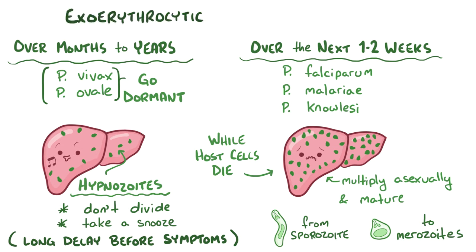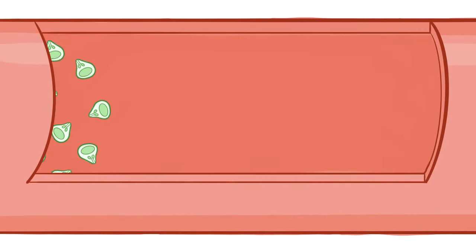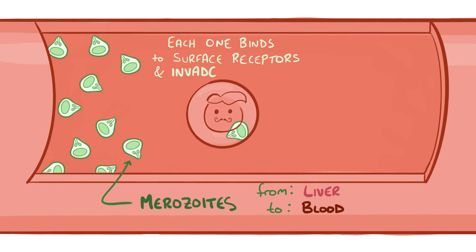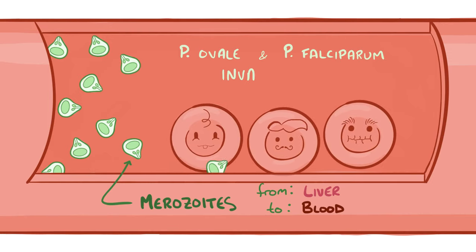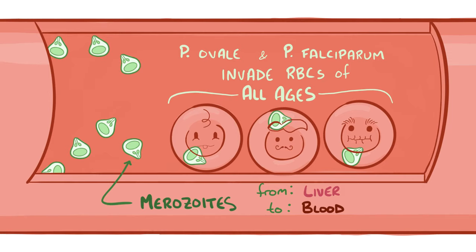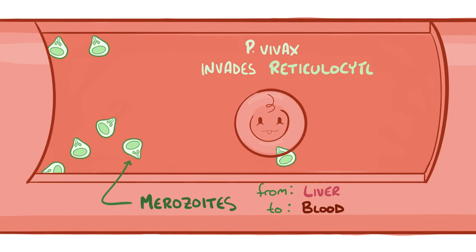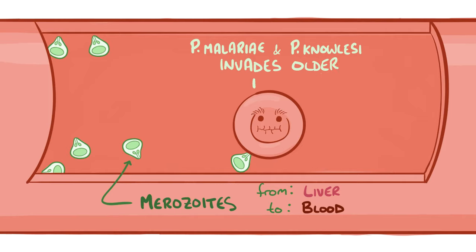This is called the exoerythrocytic phase because it happens outside of the erythrocyte, or red blood cell, and it's generally asymptomatic. The merozoites are then released into the blood, and each one binds to a surface receptor and invades a red blood cell. Plasmodium ovale and Plasmodium falciparum invade red blood cells of all ages, whereas Plasmodium vivax prefers to invade reticulocytes, which are young, immature red blood cells. Plasmodium malariae and Plasmodium knowlesi prefer to invade older red blood cells.